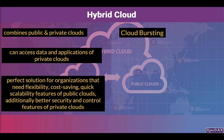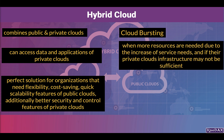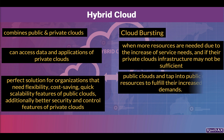There are two common types of hybrid cloud. The first is cloud bursting, in which organizations use private clouds to securely store their data and proprietary applications. However, when more resources are needed due to an increase in service needs, and if their private cloud infrastructure may need to be improved, they tap into public cloud resources to fulfill their increased service demands.